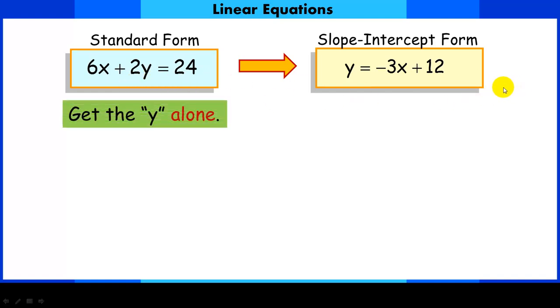Okay. So to get y alone, here's what we do. It's nothing entirely new for you guys except for a little bit at the end. So the first thing we want to do to get y alone, notice I've highlighted y, is we're going to subtract 6x from both sides.